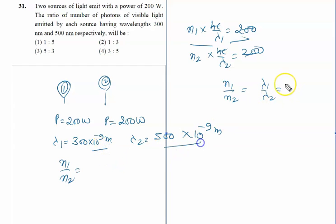Solving this, we get n1/n2 = 3/5. The right answer to this problem is option 4, which is 3:5.